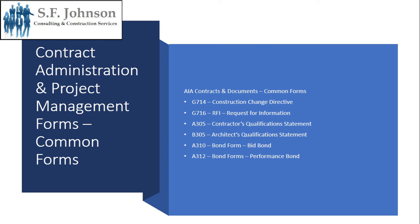More common forms: A305 is the contractor's qualification statement, which may need to be submitted when working on state projects or projects for very large companies. B305 is the architect's qualification statement, for the same reason. A310 covers bond forms for bid bonds, and A312 covers bond forms for performance bonds.